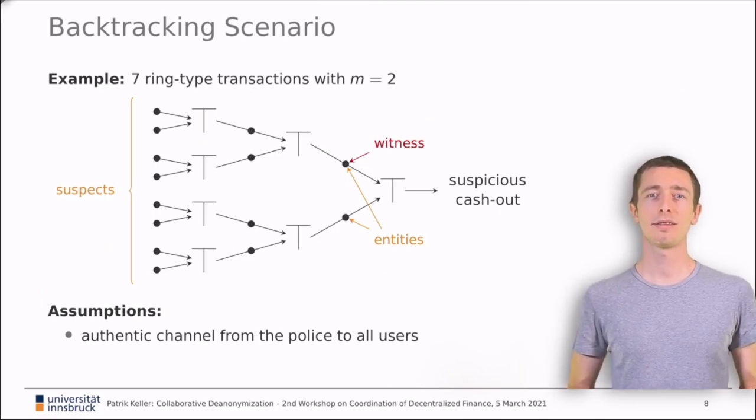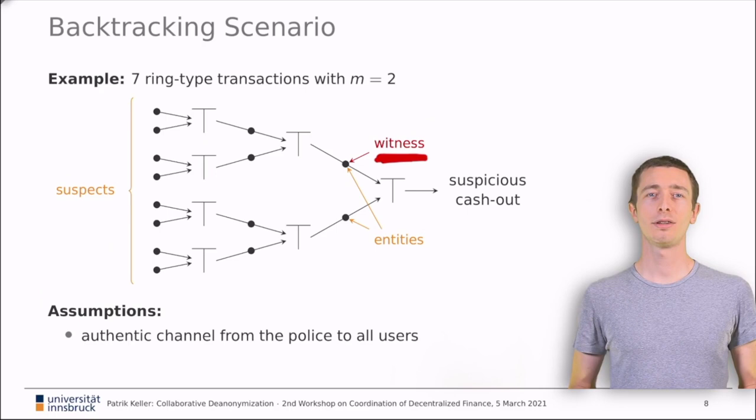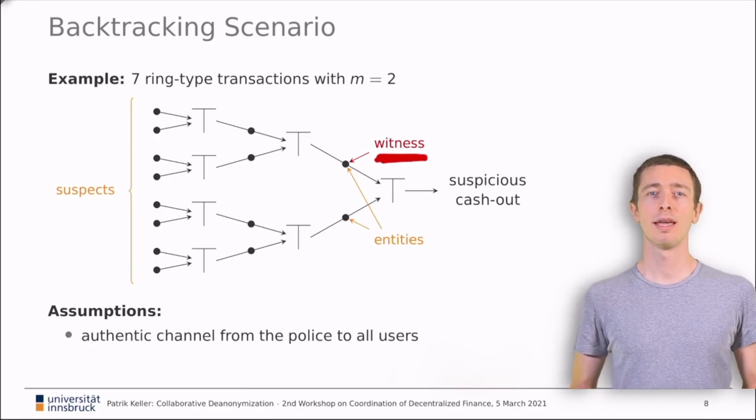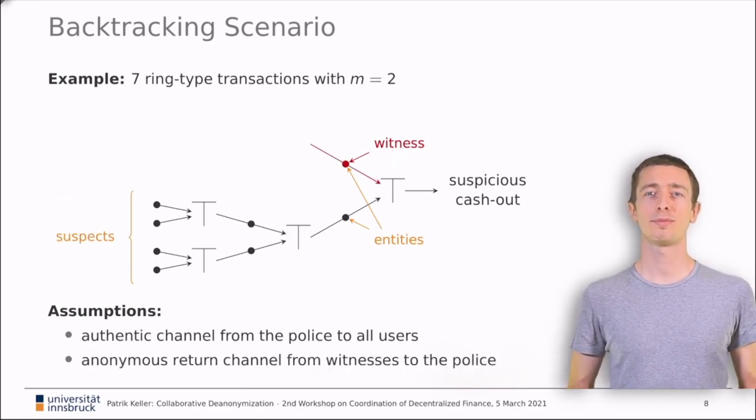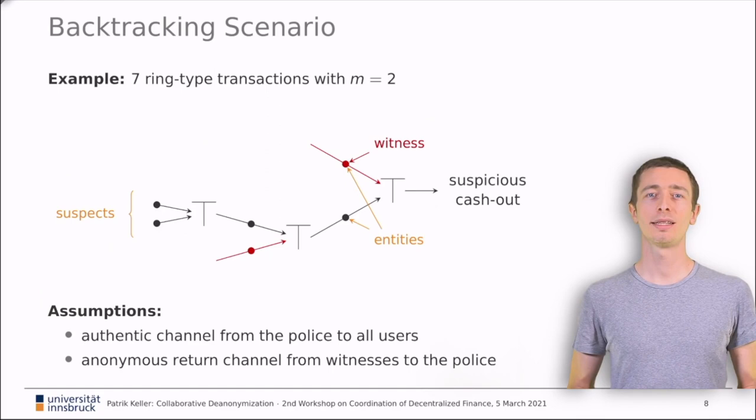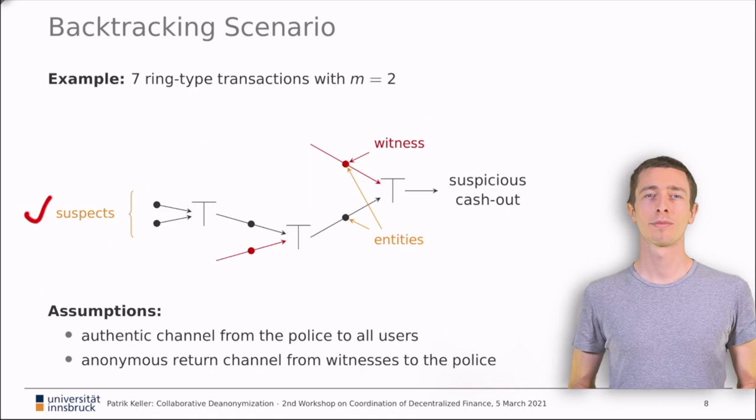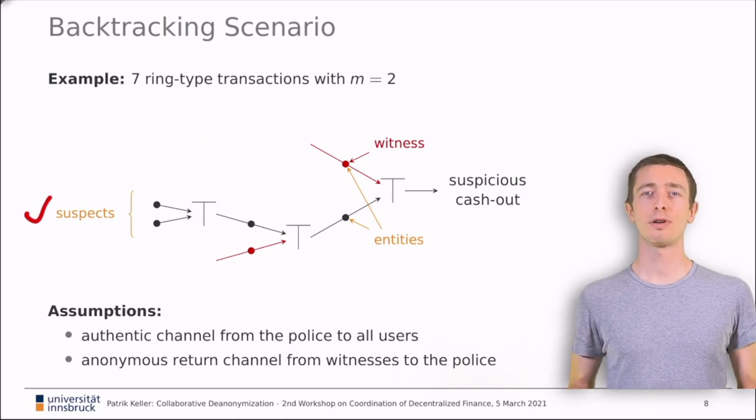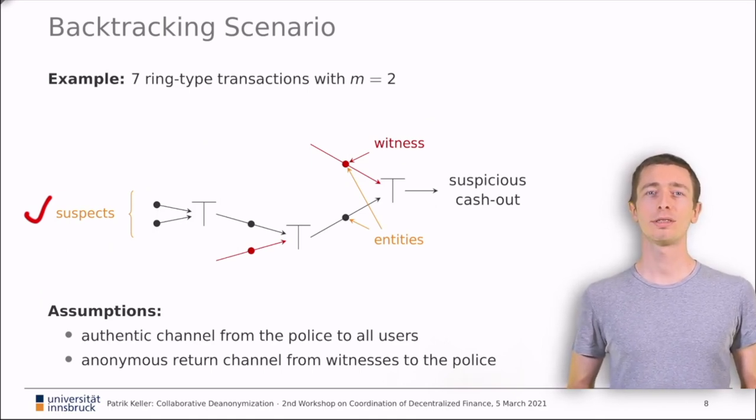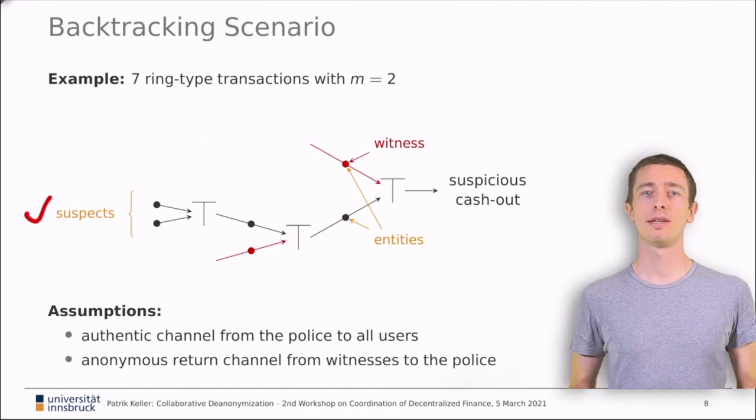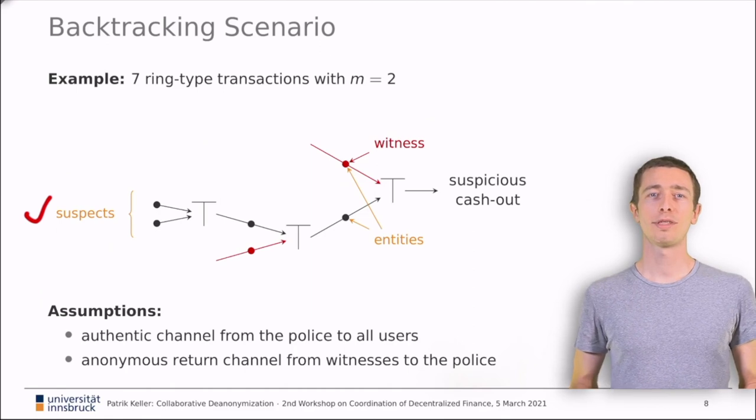Now that the participants are aware of the crime, each entity can decide whether to participate in the de-anonymization or not. In our example, the upper entity on the right becomes witness and shares a testimony against the other participant with the police. This testimony removes one half of the suspects. The police can then collect other testimonies until the set of suspects becomes small enough for traditional enforcement techniques. We will now look into how these testimonies might work in practice. We sketch protocols for the two kinds of mixed transactions and also distinguish between individual and group testimonies. The latter are more privacy-preserving.